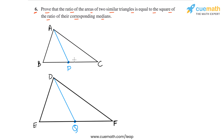So AP and DQ are corresponding medians of the two triangles. We have to show that the ratio of areas of triangles ABC and DEF is equal to the square of the ratio of the corresponding medians — that is, area of ABC by area of DEF equals (AP/DQ) squared. This is actually a very simple problem.